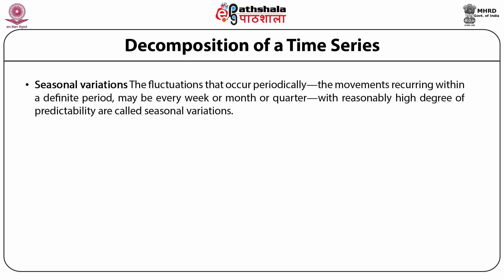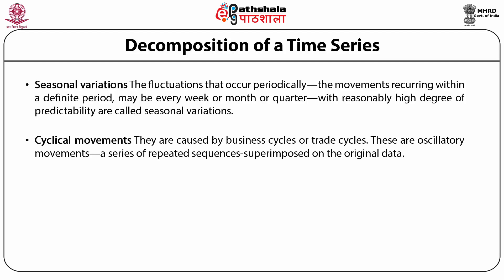Next is cyclical movements, caused by business or trade cycles. They are oscillatory movements — a series of repeated sequences superimposed on the original data — of longer duration than a year. A company's sales may be high because the level of economic activity is high, or low due to overall subdued economic activity or recession.